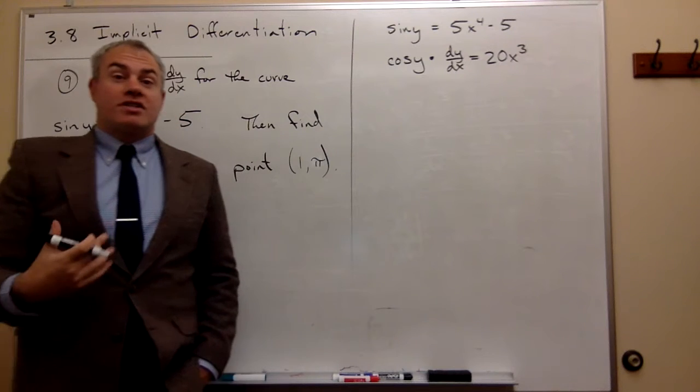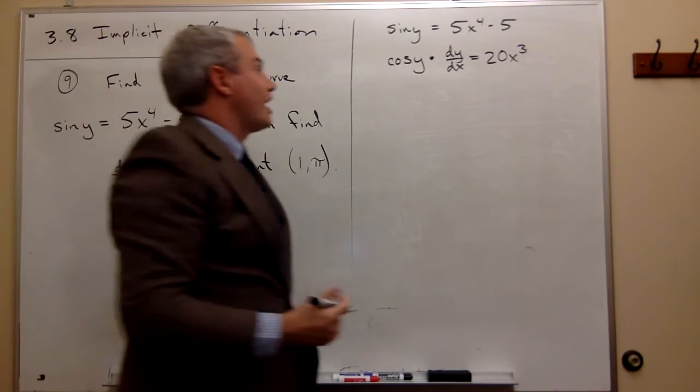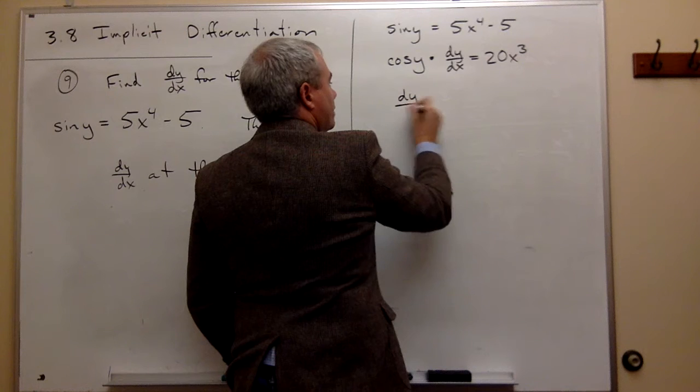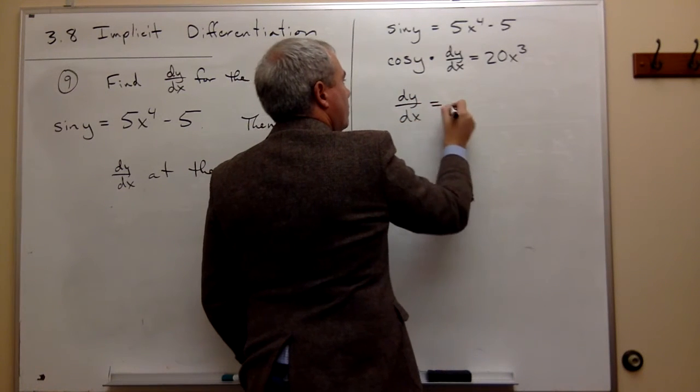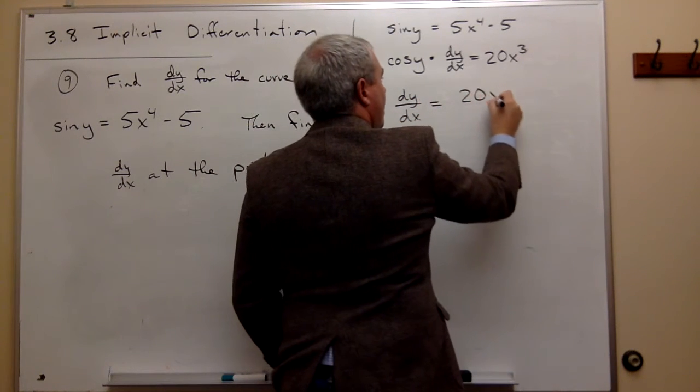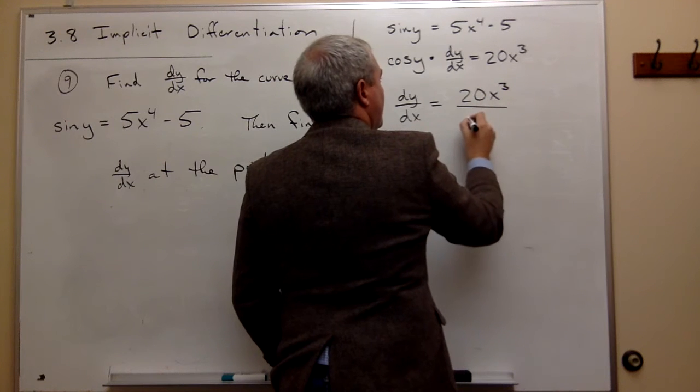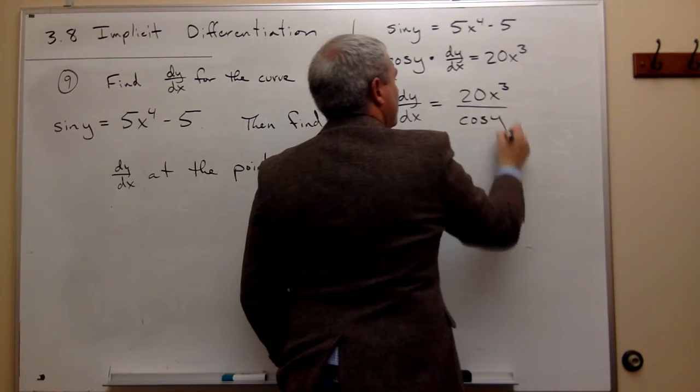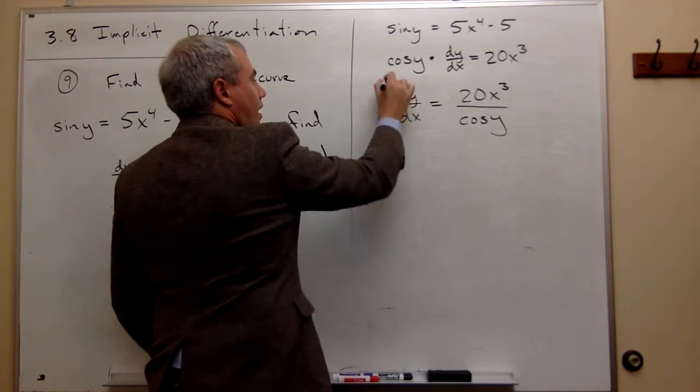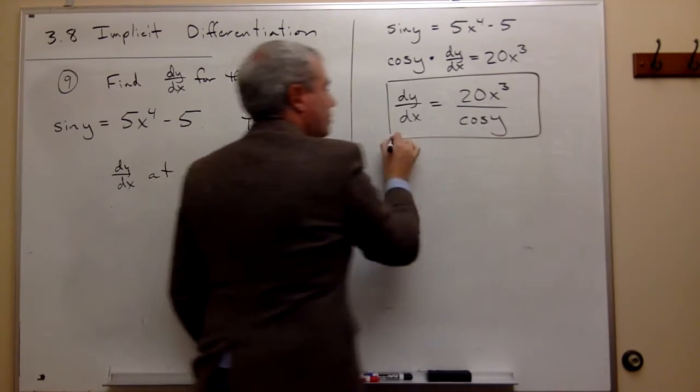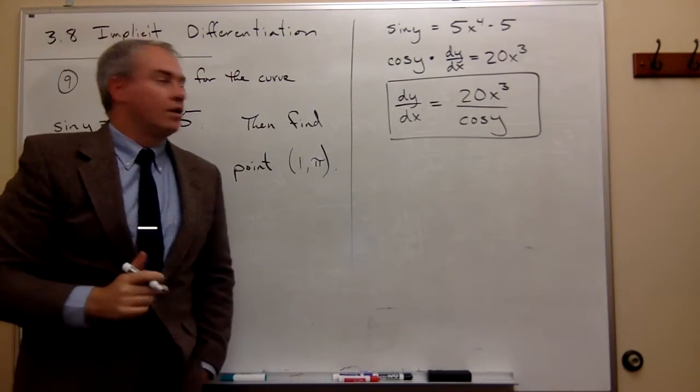Now we just need to solve this for dy/dx. If I do, I get that dy/dx equals 20x cubed divided by cosine of y, and I'm done. So here's the derivative of y.